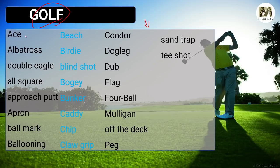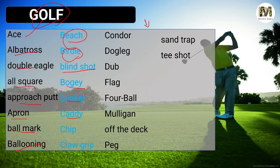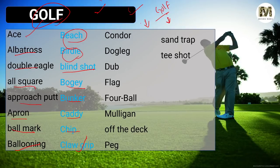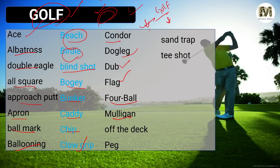Now Golf. Golf terms: Ace, Albatross, Double Eagle, All Square, Approach Putt, Apron, Ball Mark, Ballooning, Beach, Birdie, Blind Shot, Bogey, Bunker, Caddy, Chip, Claw Grip. I wonder if anyone actually plays golf — I have never come across any person who has played golf. Please comment below — I really want to see how many people here play golf. It's called a gentleman's game and I also want to play it. Further terms: Condor, Dog Leg, Dub, Flag, Four Ball, Mulligan, Off the Deck, Peg, Centrap, and Tee Shot.